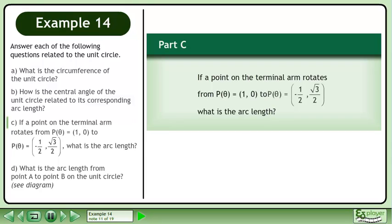Now we'll move on to part C. If a point on the terminal arm rotates from P(θ) equals (1,0) to P(θ) equals (-1/2, √3/2), what is the arc length?